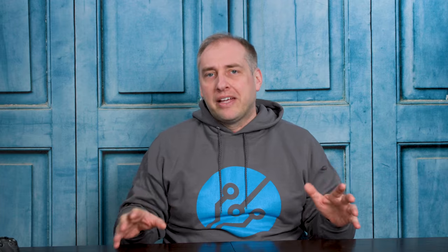The Intel SKU stack is an absolute mess and there's no other way to describe it. There are all these new letters that sometimes mean something but not always. It's frankly just a complete mess in terms of the Xeon naming scheme at this point. Hopefully Intel is going to go do a project to get rid of what they have right now and just get to something that's more usable.